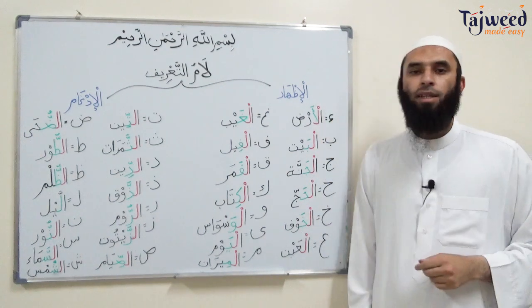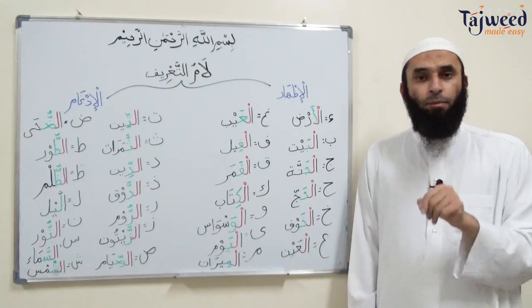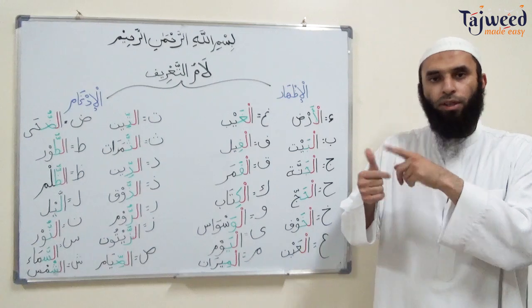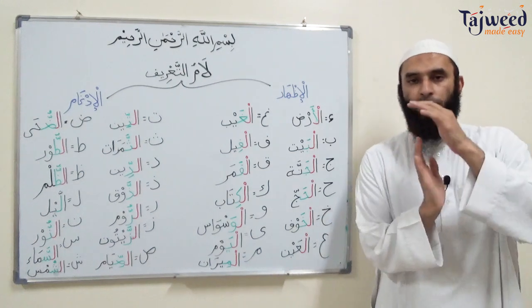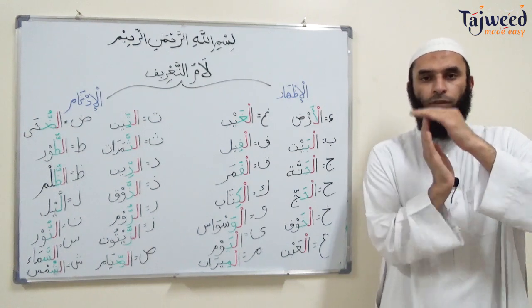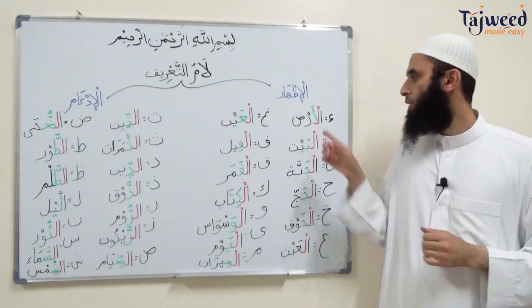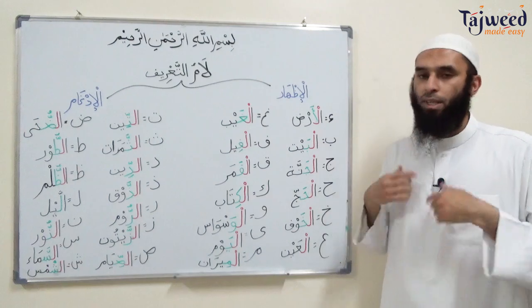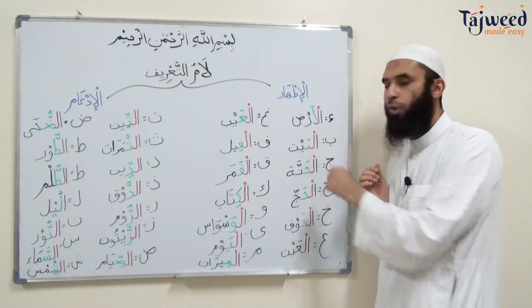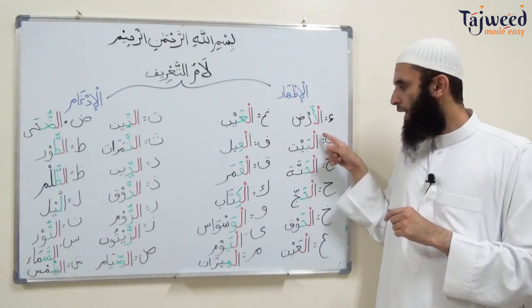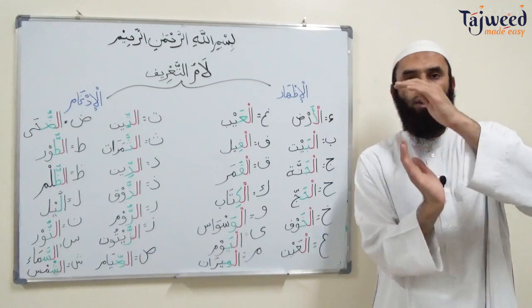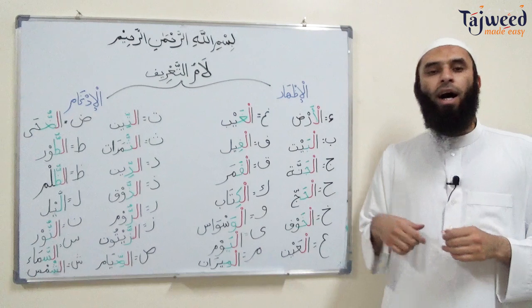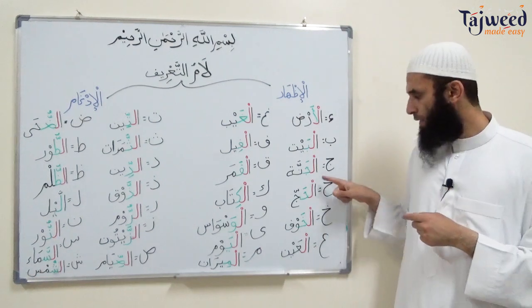With the moon letters, the لام is written with a sukun and is pronounced clearly - touch the edge of the tongue to the roof of the mouth. For example: أَلْأَرْض, أَلْبَيْت (the house - بيت becomes specific as الْبَيْت), أَلْجَنَّة, أَلْحَج. Remember: with these letters, the لام is written with a sukun and pronounced clearly.